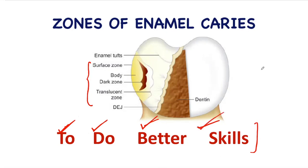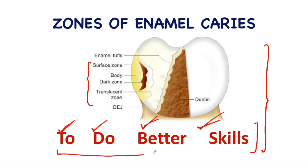This is how you remember the zones of enamel caries — just remember this simple line: 'to do better skills.'